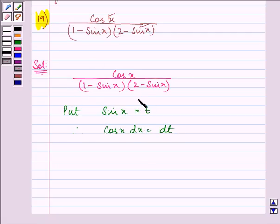Let us integrate the function. We have cos x dx upon 1 minus sine x into 2 minus sine x.